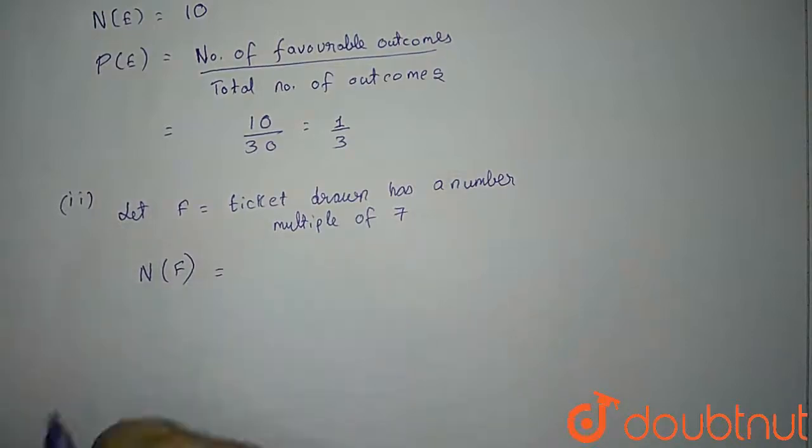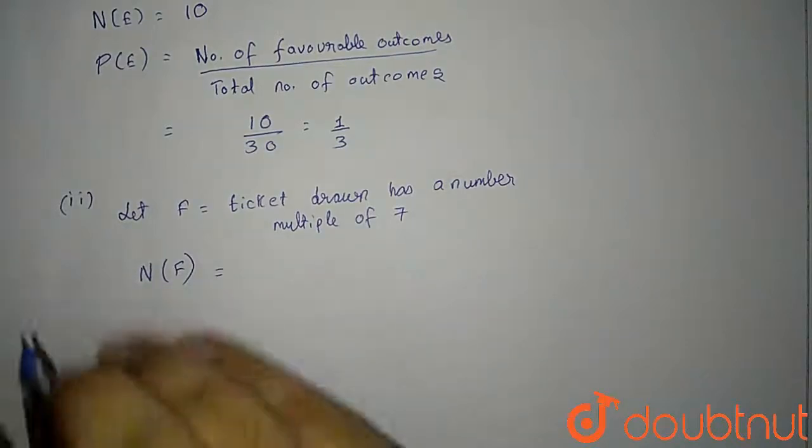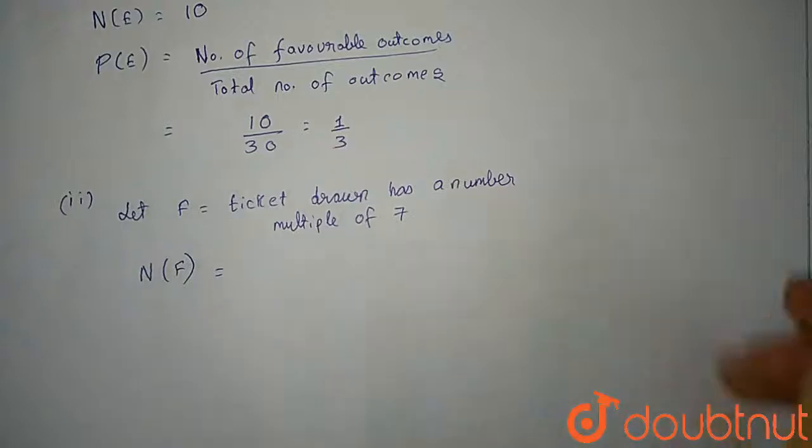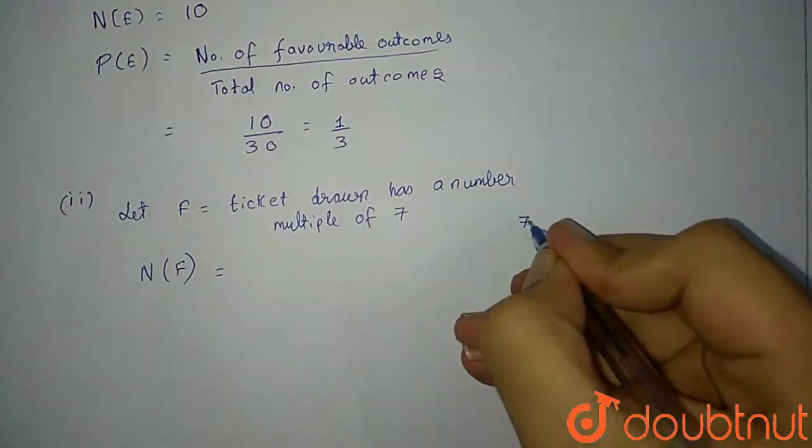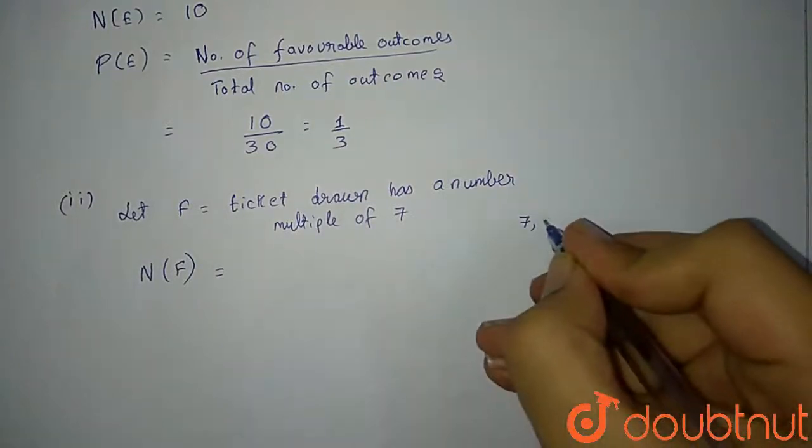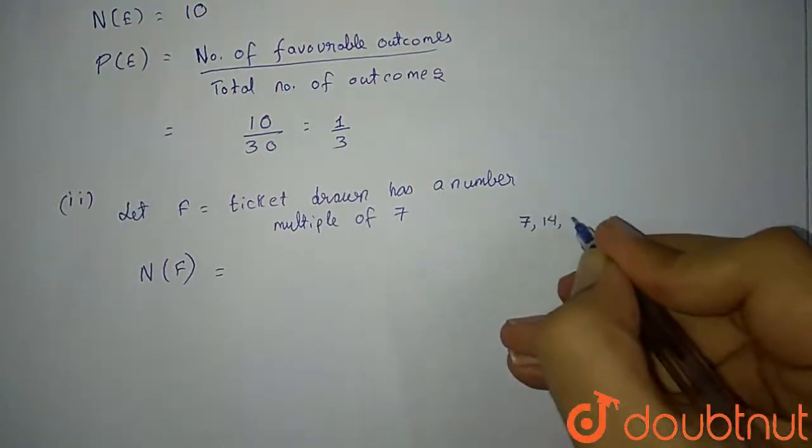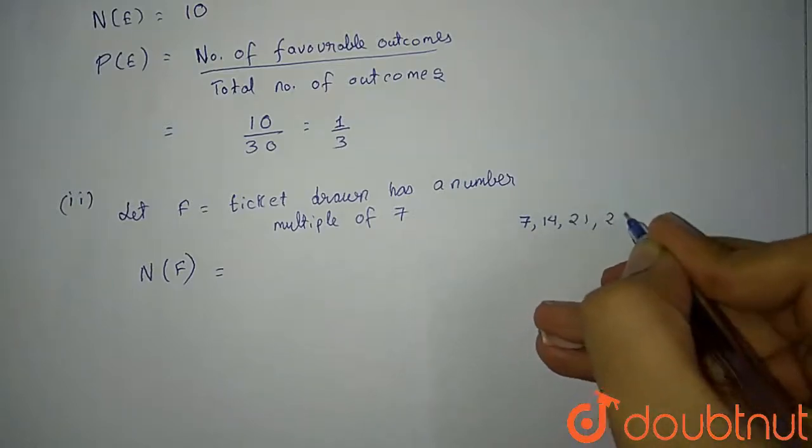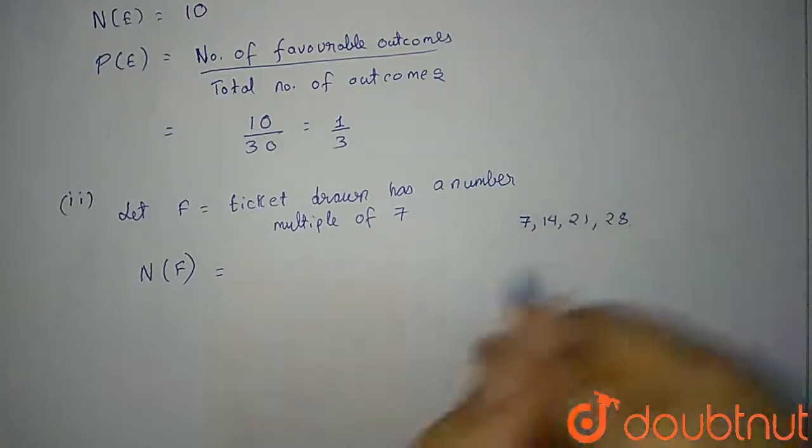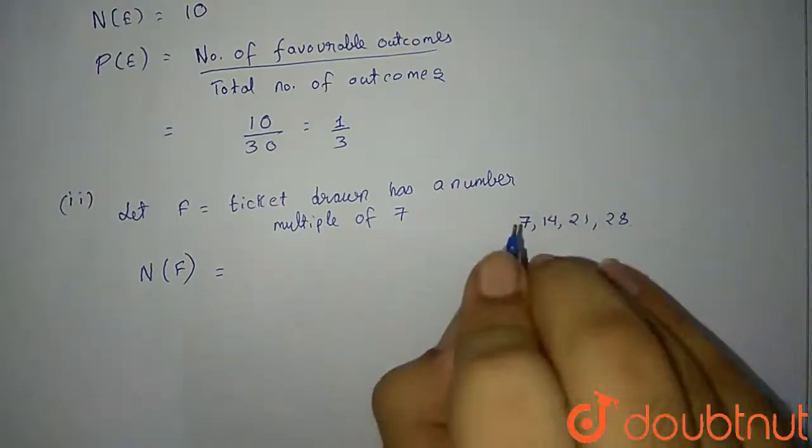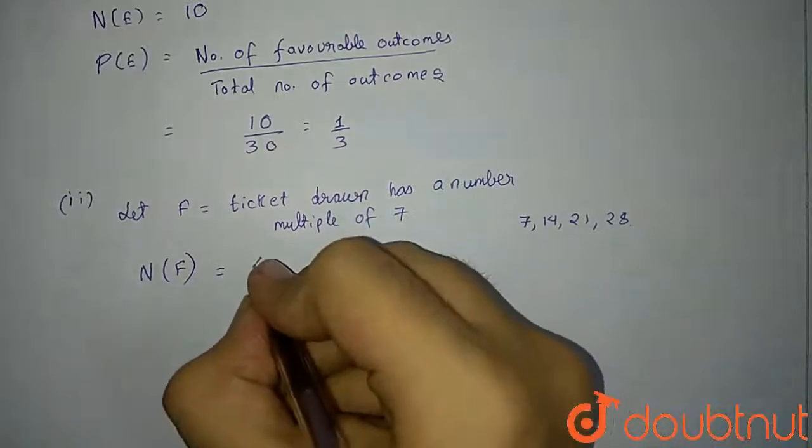What are the number of possible outcomes for this? How many multiples of seven are there from one to 30? The first is 7, then next is 14, then next is 21, then next is 28, and after that 35. So these are four outcomes.